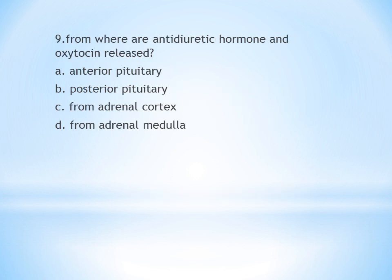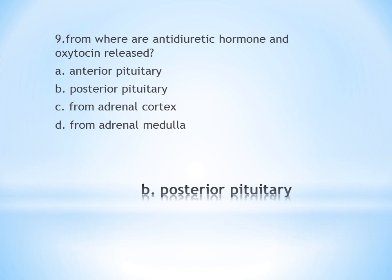Ninth question: From where are antidiuretic hormone ADH and oxytocin released? A. Anterior pituitary. B. Posterior pituitary. C. Adrenal cortex. D. Adrenal medulla. ADH and oxytocin are released from the posterior pituitary. The answer is B.